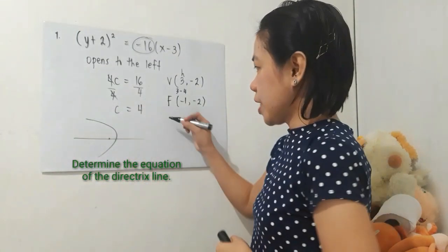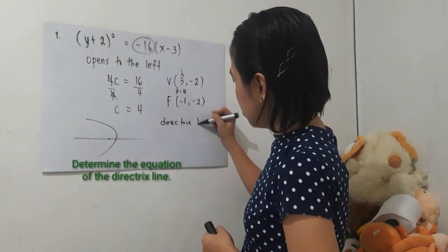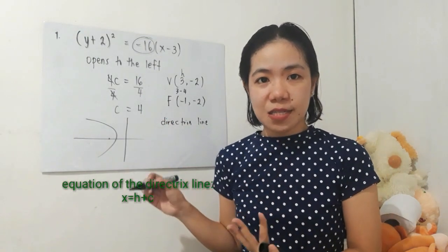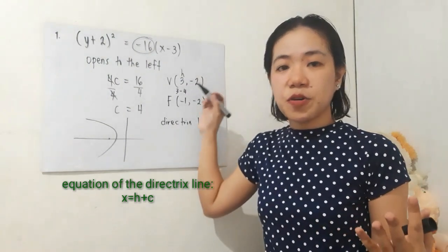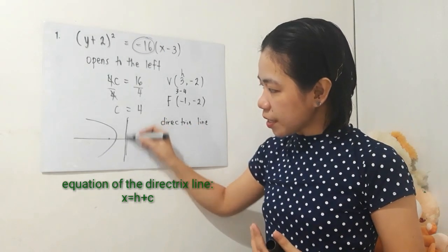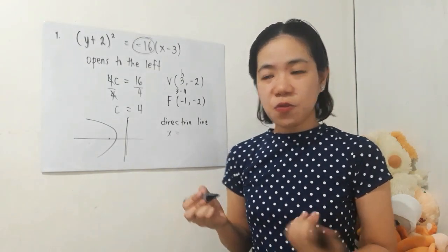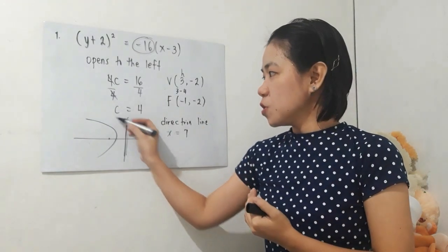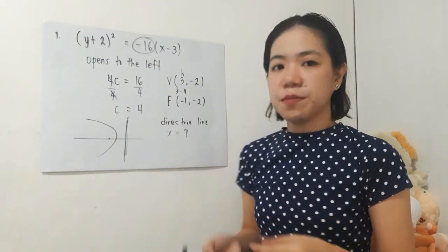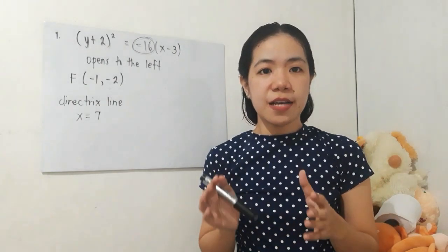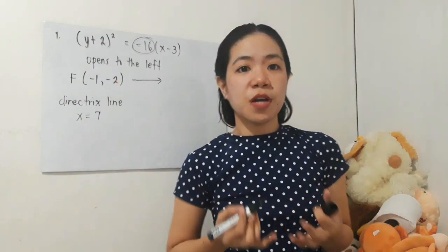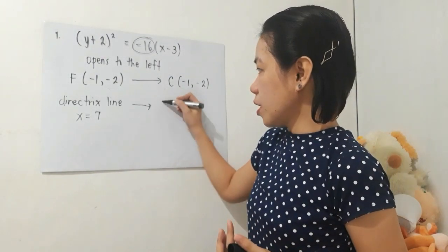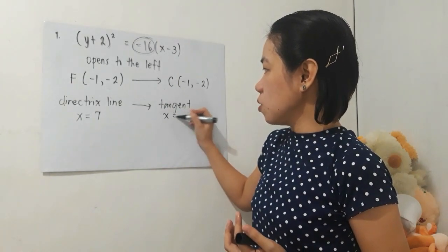Now we'll find the directrix line. The directrix is outside the curve. Since the parabola opens to the left, the directrix line will be on its right side, meaning we add 4 to the x-coordinate of the vertex. So the directrix line will be x equals 3 plus 4, that is x equals 7. Why add? Because you move to the right from the vertex — c units to the right. Based on the problem, the circle has its center at the focus of the given parabola, so the center is at (−1, −2). And it is tangent to the directrix line, meaning it's tangent to x equals 7.